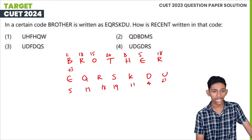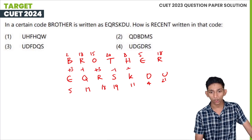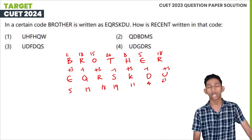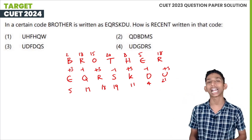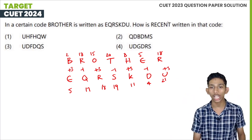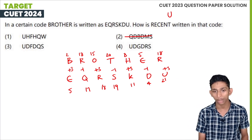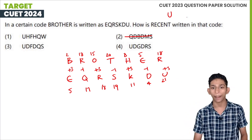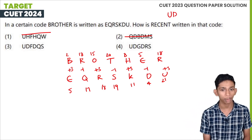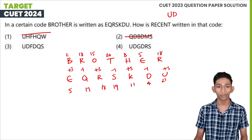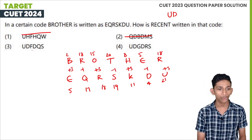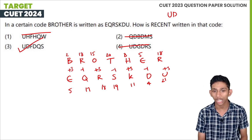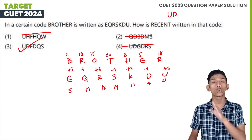Working through the coding pattern for 'brother' as E-Q-R-S-K-D-U, we find the corresponding letters. Then C, D, E, F follow the pattern. Option 3 gives us U, D, F, D, Q, S, I as the answer.